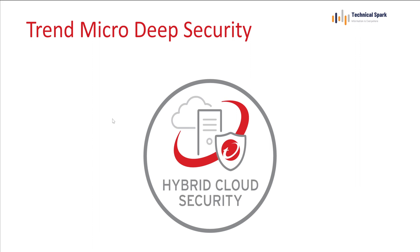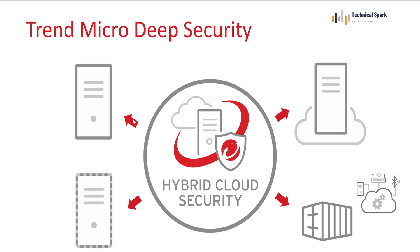The Deep Security platform is the core of the Trend Micro hybrid cloud security solution. Deep Security provides advanced server security for physical, virtual, and cloud-based computers. It also protects enterprise applications and data from breaches and business disruption without requiring emergency patching. This centrally managed platform consolidates security operations within a single management dashboard for all capabilities, simplifies security operations while enabling regulatory compliance, and accelerates the ROI of virtualization and cloud projects. Deep Security is FIPS certified.